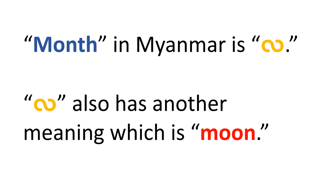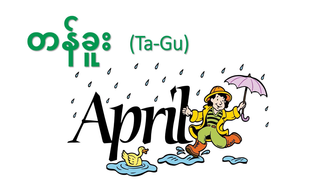Month in Myanmar is called La. La also has another meaning, which is Moon. The first month of the calendar is Dagu, which is this month, April.